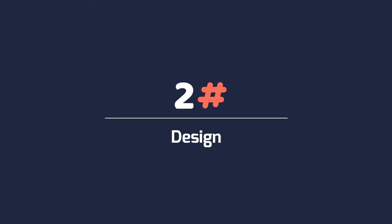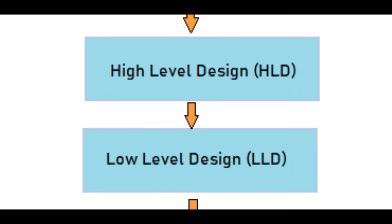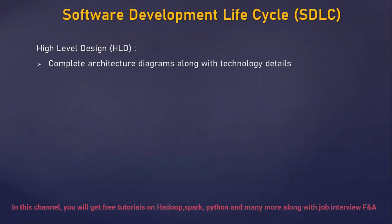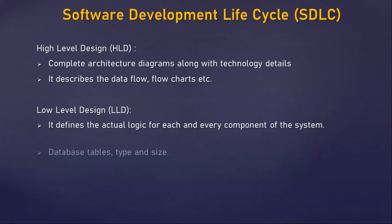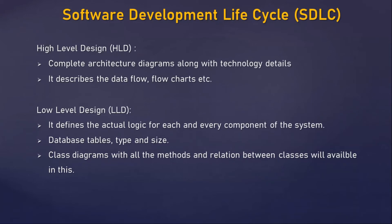Phase two: Design. In this phase, system and software design documents are prepared as per the SRS document. There are two types of design documents: the High Level Design document (HLD) and the Low Level Design document (LLD). The HLD contains complete architecture diagrams along with technology details, and it describes data flows, flowcharts, etc. The LLD defines the actual logic for each component of the system, including database tables, data types and sizes, and class diagrams with all methods and relations between classes.